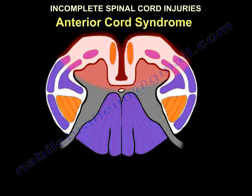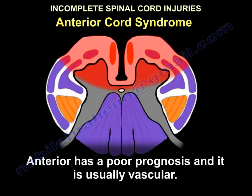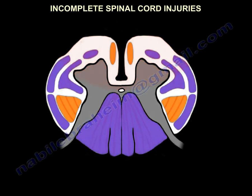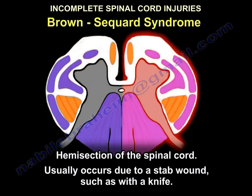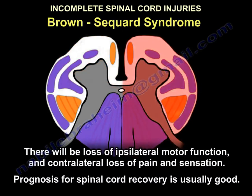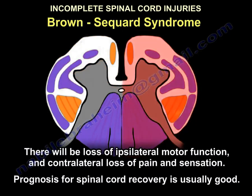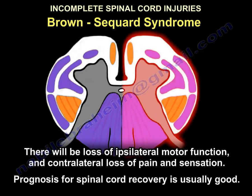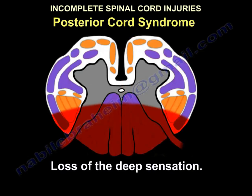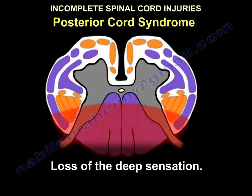The anterior cord has very poor prognosis and is usually vascular. Brown-Séquard is hemisection of the spinal cord, usually by a knife. You will have ipsilateral loss of motor and contralateral loss of pain and sensation, and the prognosis for recovery is usually good. The posterior cord presents with loss of deep sensation.